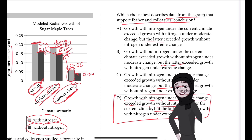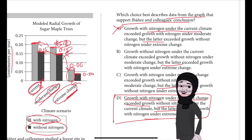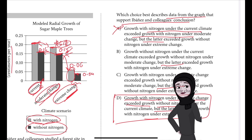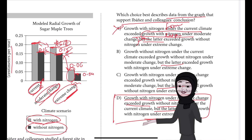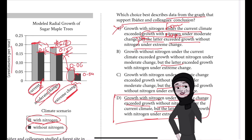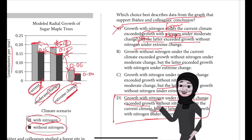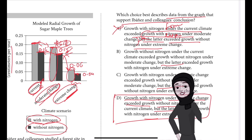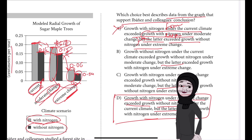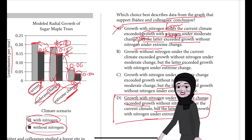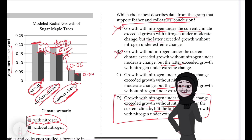Choice A is incorrect. Although it accurately represents data in the graph, it says growth with nitrogen under current climate exceeded growth with nitrogen under moderate change — that's the former — but the latter, meaning growth with nitrogen under moderate change, exceeded growth without nitrogen under extreme change. We are comparing those two values, but that comparison does not help derive what is needed for Ebanes and colleagues' conclusion.